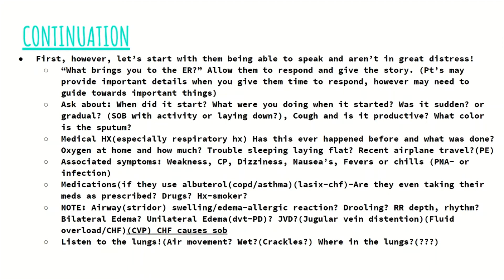Then go into medical history, especially respiratory history like COPD, asthma, prior PEs and DVTs, and then ask about cardiac history — these two go hand in hand and you ask about both almost simultaneously. Ask about other medical history. Ask if this has happened before, what they were told, and what was done for them. If they have COPD, ask whether these symptoms feel like previous COPD exacerbations.